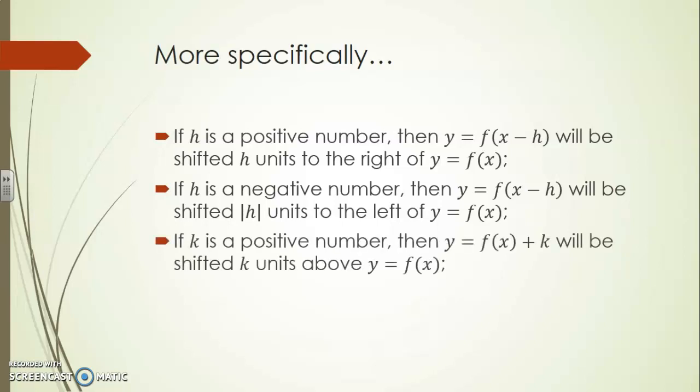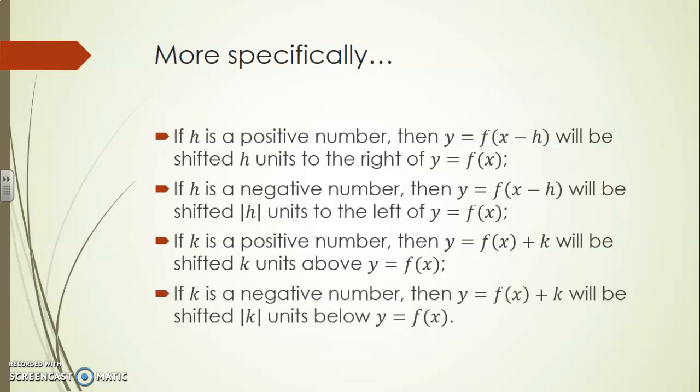If k is a positive number then y equals f of x plus k will be shifted k units above the original function y equals f of x. And finally if k is a negative number then y equals f of x plus k will be shifted absolute value of k units below the original graph.